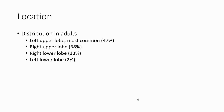Regarding location: left upper lobe is most common, up to 47 percent; right upper lobe around 38 percent; right lower lobe; and left upper lobe at 2 percent.